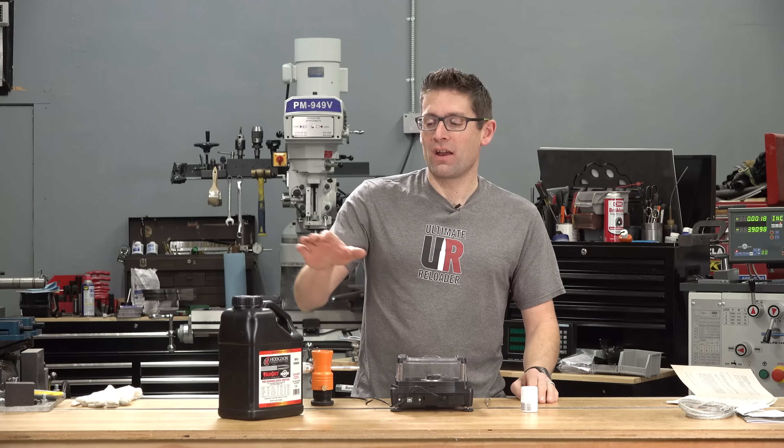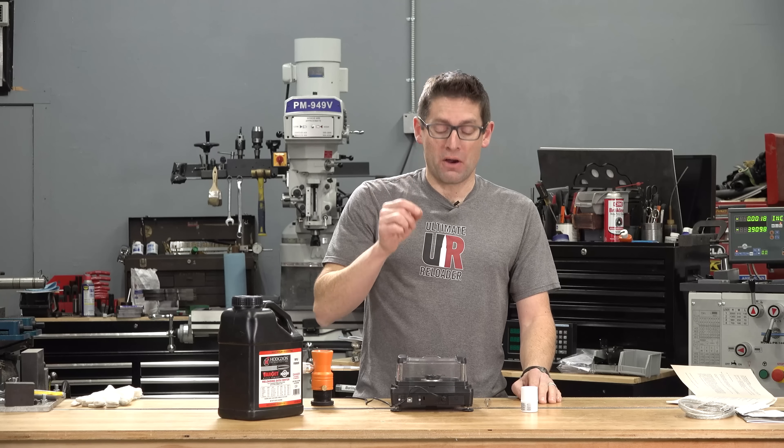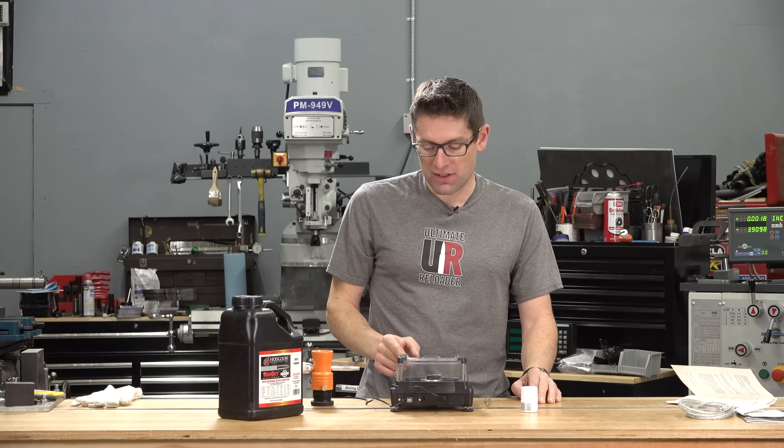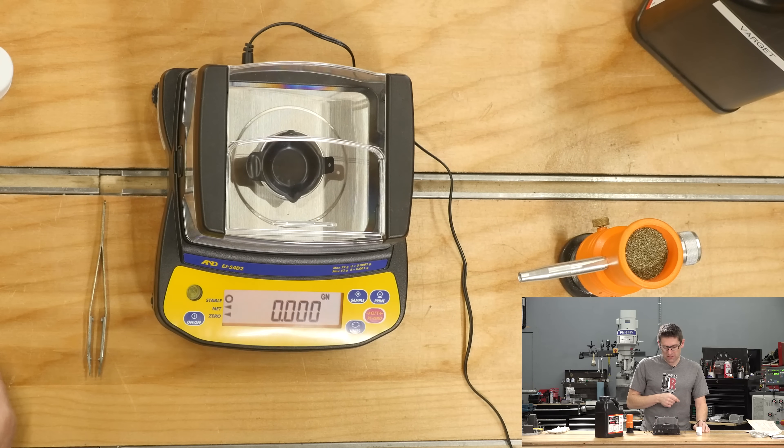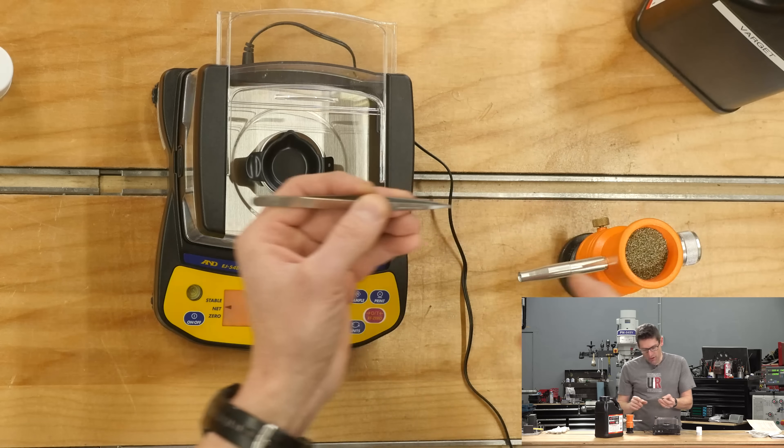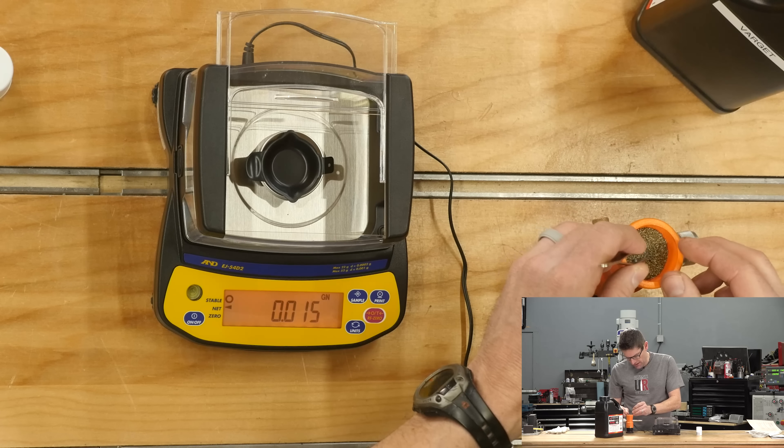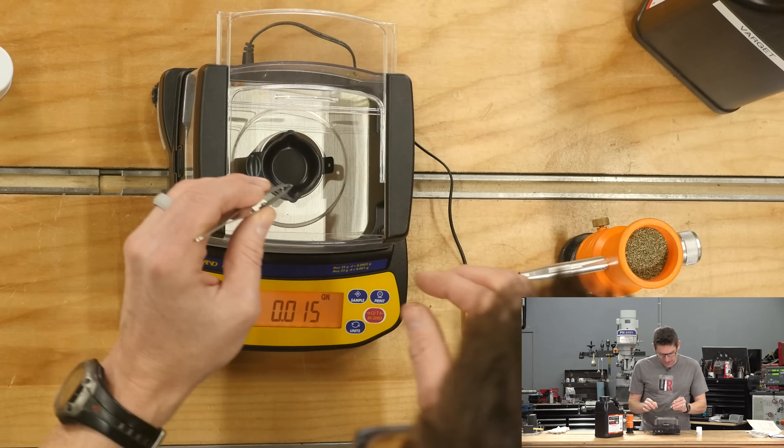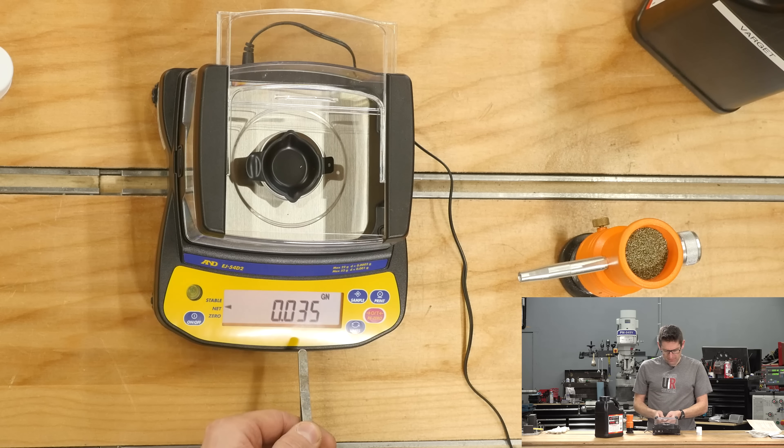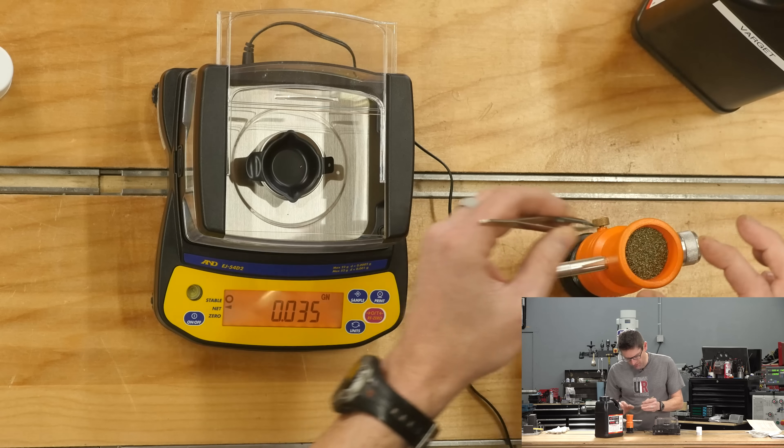So to start off our testing, I thought I would take a look at a powder that I'm very familiar with, and that's Hodgden Varget. I happen to know that each of the granules weigh about 0.02 grains, so I thought it would be interesting to zero out the scale here and see what happens when we add granules granule by granule. I don't have a hole through the side of the windscreen here to use the trickler directly, so I'm going to pick them up with these tweezers here. There's one stick. 0.035 is what it's saying. Let's see what happens when we get two in there. There's two. 0.05.